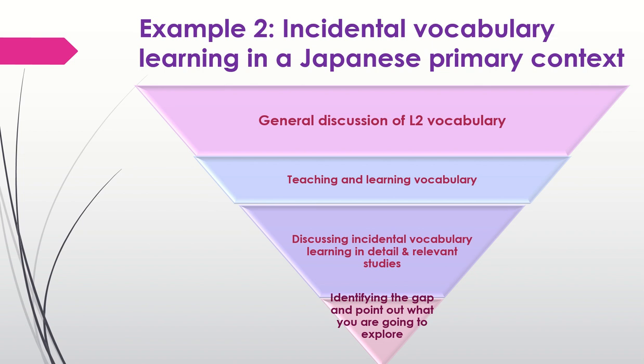Then you need to concentrate on incidental vocabulary learning, which you will discuss in more detail. Again, your discussion will gradually lead to the research gap. You will explain what hasn't been done and what you are going to explore. Please remember that these are just examples, the aim of which is to demonstrate a general structure of the literature review. You might focus on other aspects related to these topics if you are exploring them.